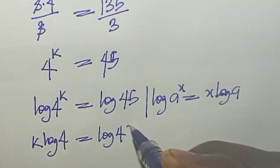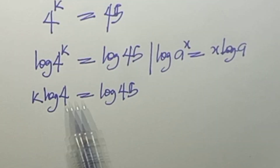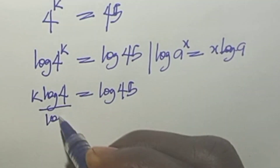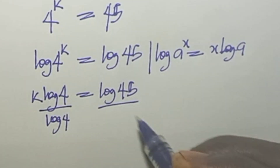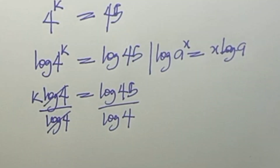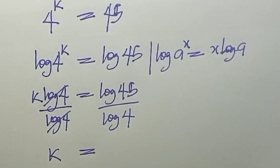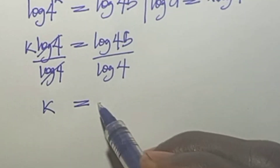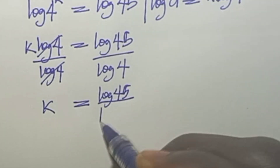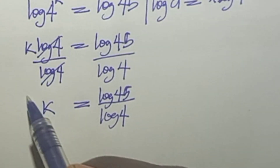Dividing both sides by the coefficient of k — that is, dividing by log 4 on both sides — log 4 cancels out, leaving 1 times k. So k equals log 45 over log 4, and this can be accepted as the value for k.